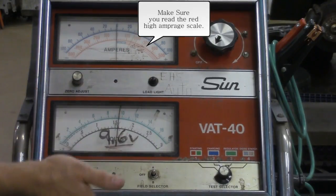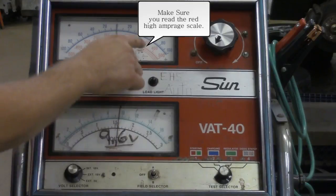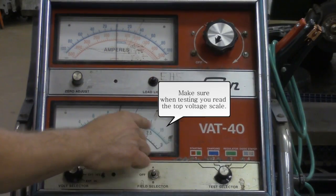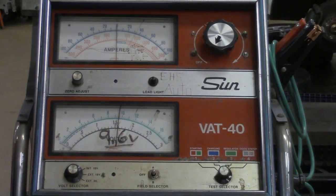The colors are a little bit off because they're faded over time, but red is for the high amperage scale, green is for the high voltage scale up on top. So next we'll go ahead and hook it up to the vehicle.